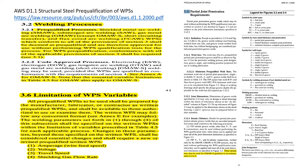But what confuses people the most is the joint designation. The lower case letters — for example, A, B, C, D, etc. — are used to differentiate between joints that would otherwise have the same joint designation. I explain this better in the next slide.